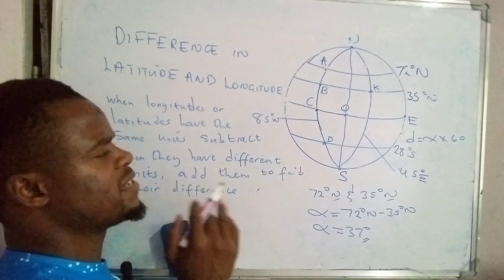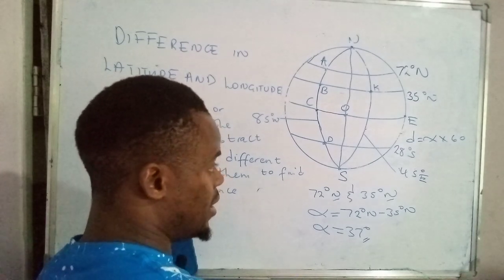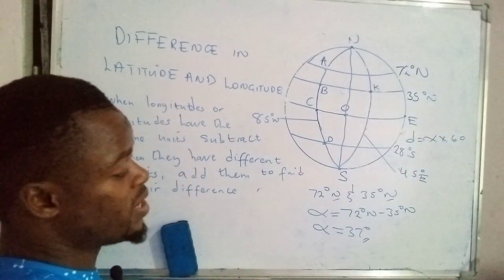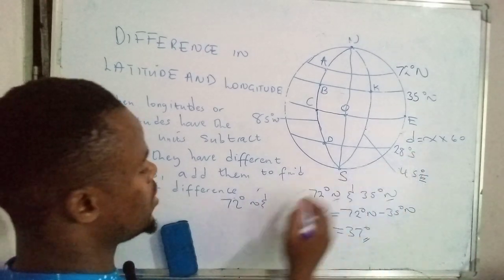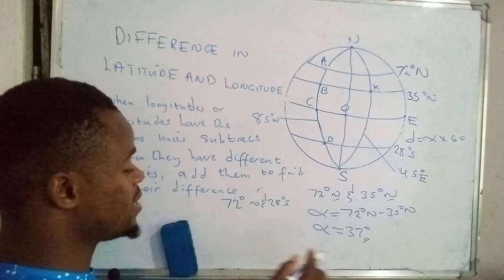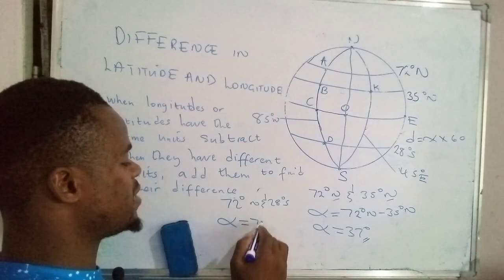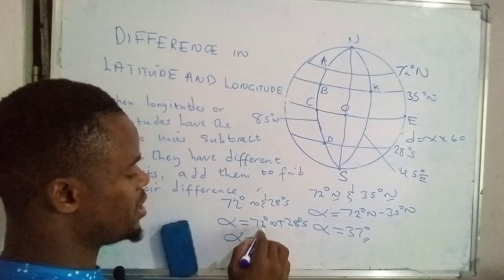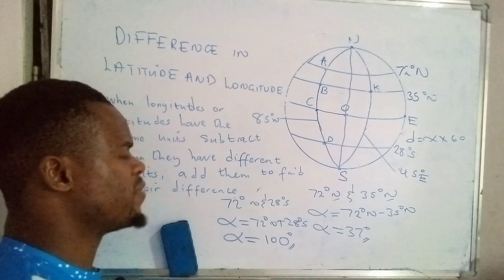How about finding the difference between two latitudes in different hemispheres? Pay attention to the units — this one is in the southern hemisphere and that one is in the northern hemisphere. Since they have different units, we have 72 degrees north and 28 degrees south. Because they are in two different regions, we add them. So the difference is 72 degrees north plus 28 degrees south, which gives us 100 degrees.